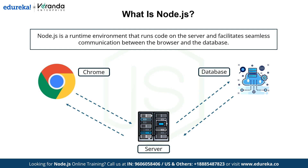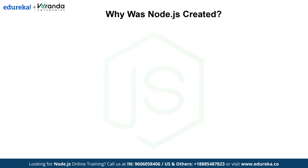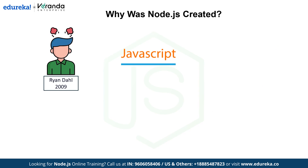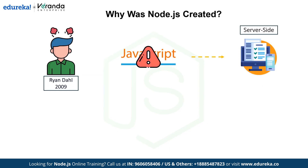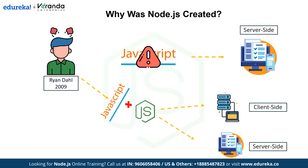Let's see why Node.js was created. Back in 2009, developers were frustrated because JavaScript could only run on the client side, limiting its capabilities. Ryan Dahl solved this problem by creating Node.js — a runtime environment that allows JavaScript to run on both the server side and the client side, making JavaScript a full-stack language usable for both client-side and server-side applications.